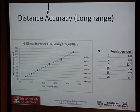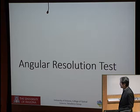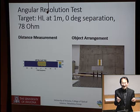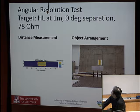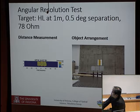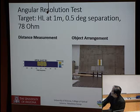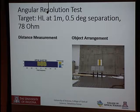For the angular resolution test, three targets are placed side by side with gradually increasing spacing. At 0.5-degree spacing they are resolved, at 1 degree clearly resolved, and at 1.5 degrees clearly resolved. This test gives us intuition for how finely we can resolve objects in the spatial domain.